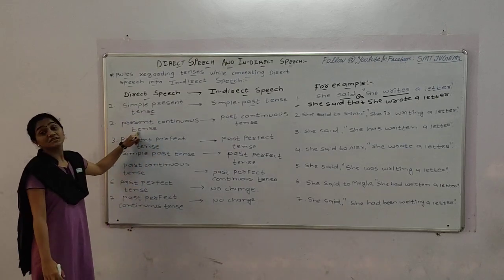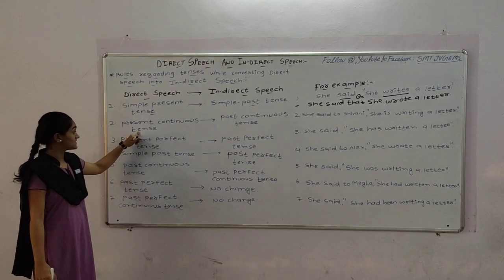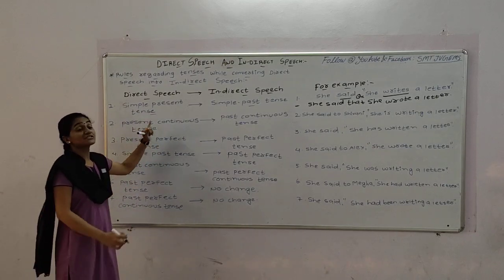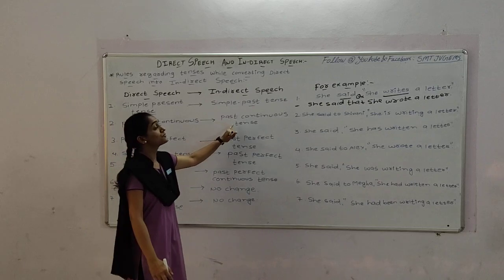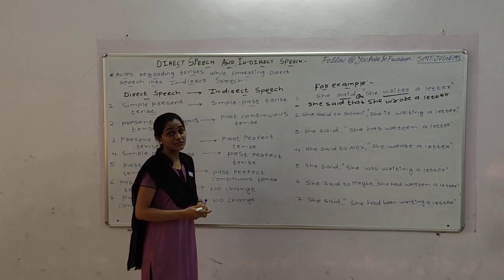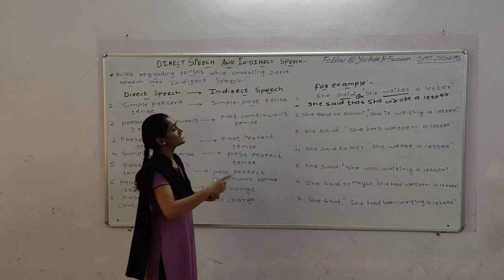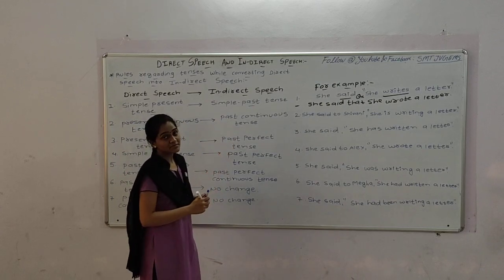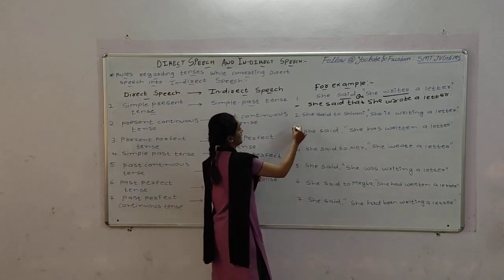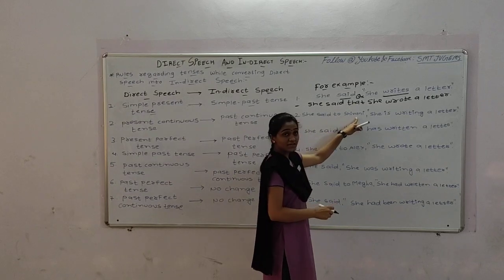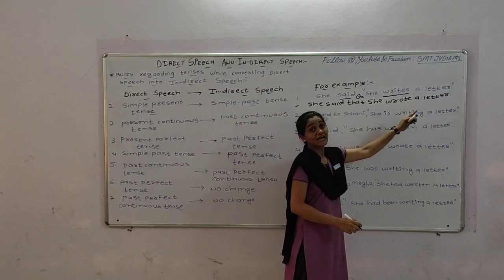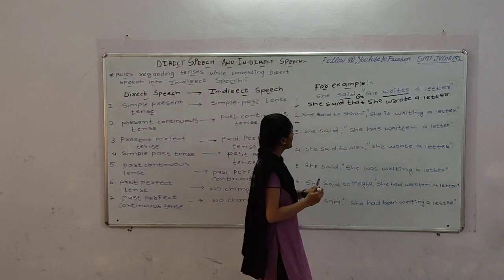The second tense is present continuous tense. Present continuous tense changes into past continuous tense. Let's see the example: she said, she is writing a letter.